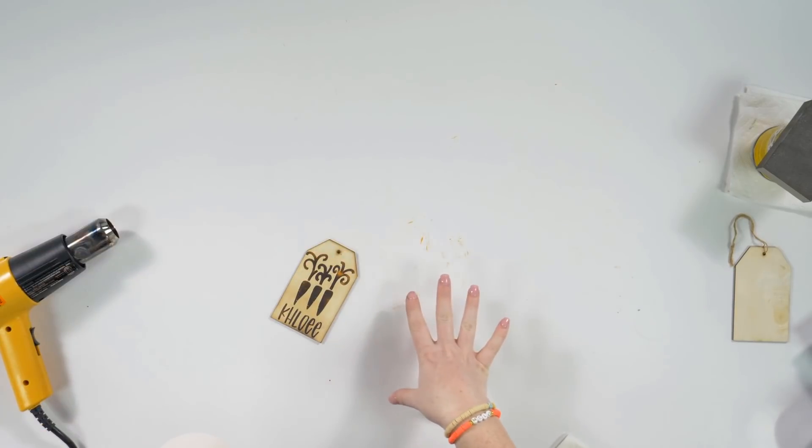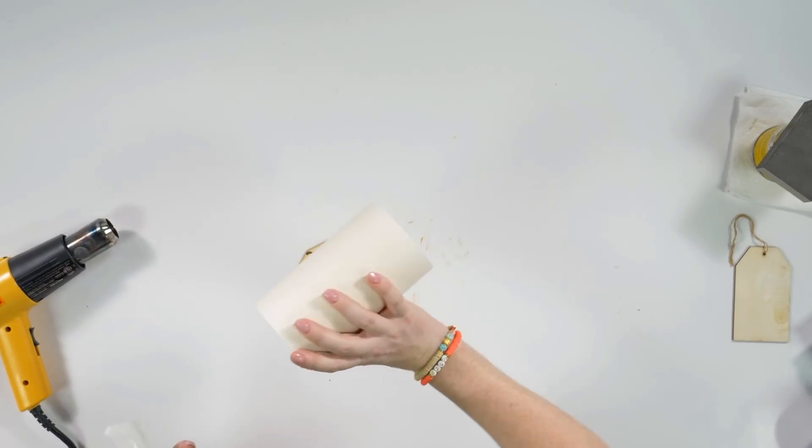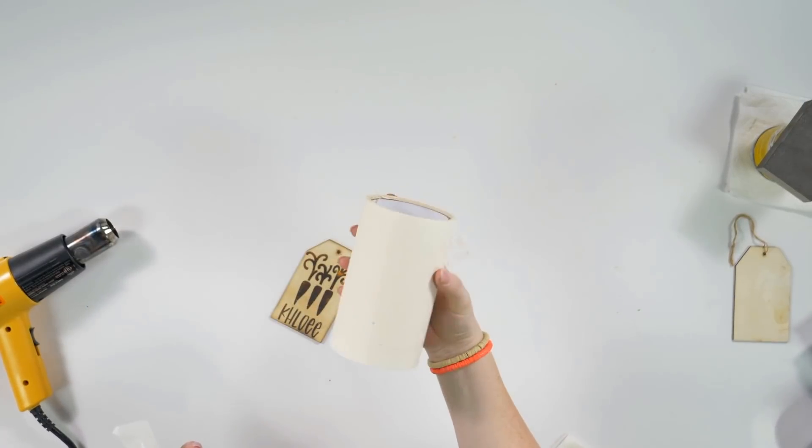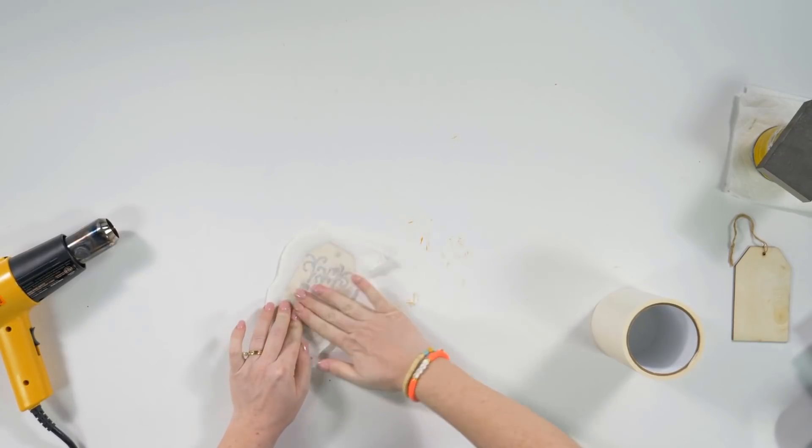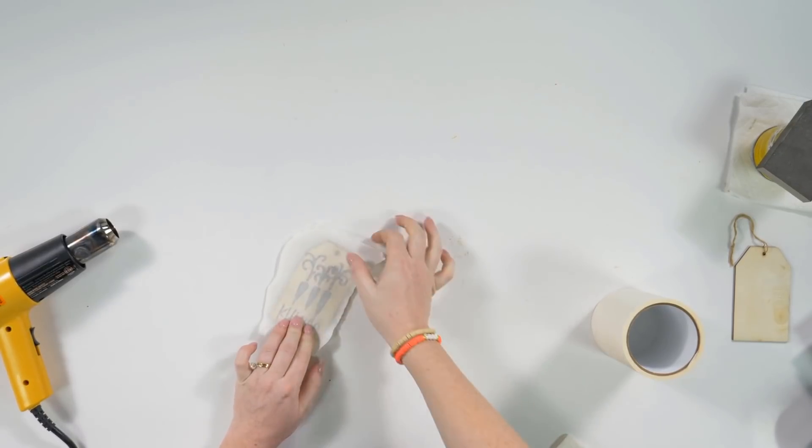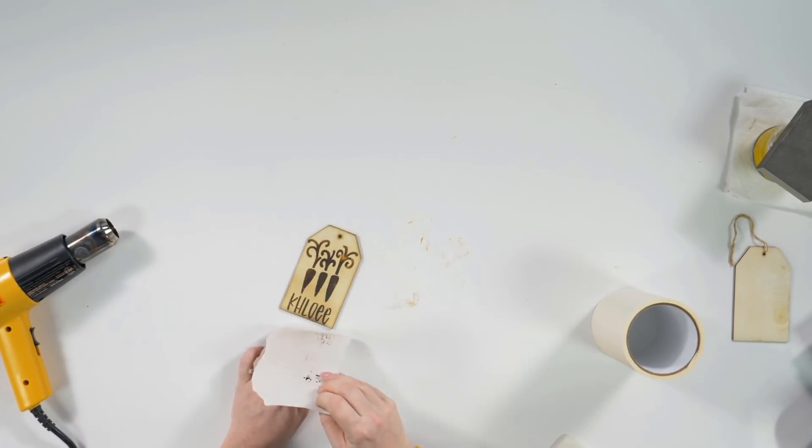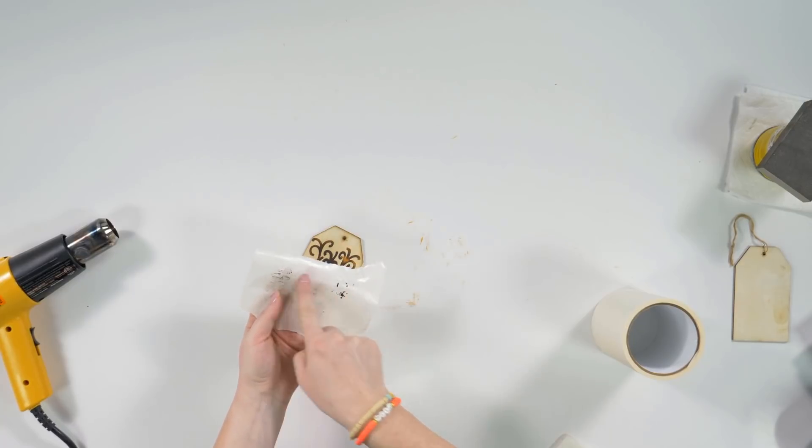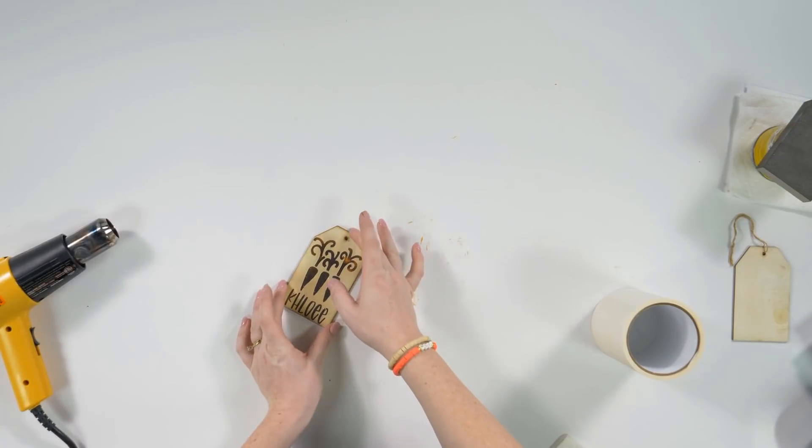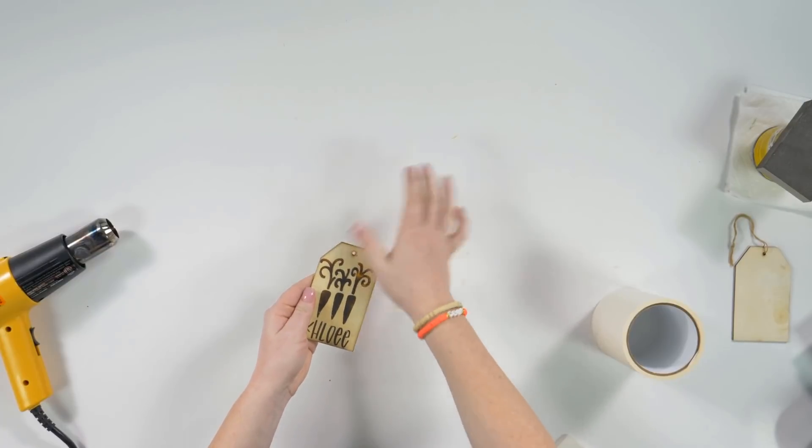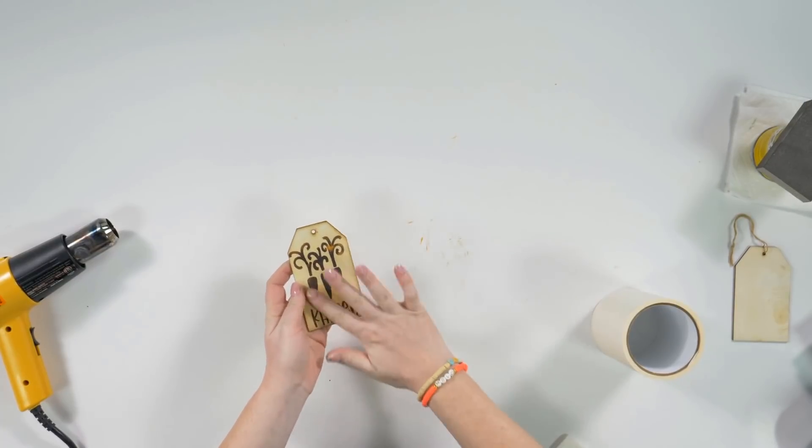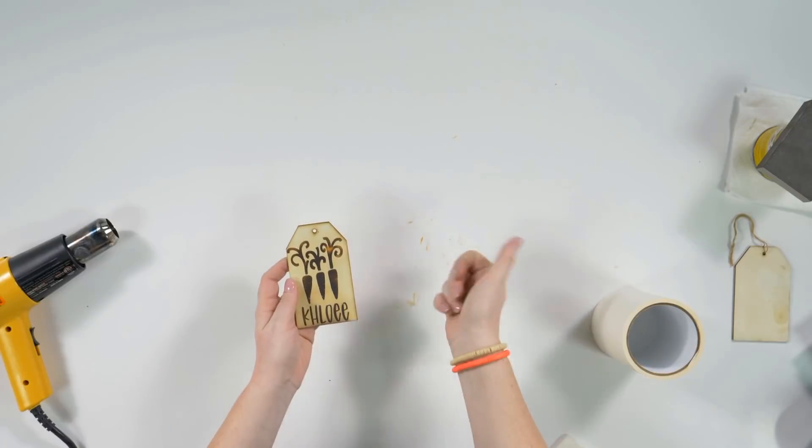Once you've completely burned this, if you need to, go in with some masking, transfer or any kind of tape, and you can put this on top of your tag and just kind of rub over top of it and then peel it off and it's going to get off any extra soot. You want to do that before you stain it because it may smear on your tag. And then you can just take your finger and make sure that there's no extra anywhere before you go in with your stain.